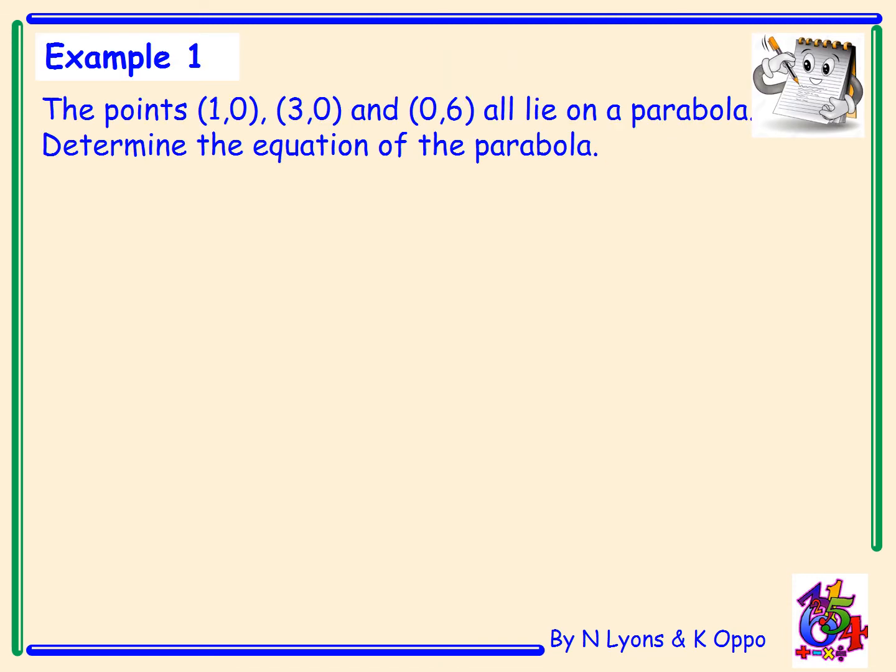Let's try an example. The points (1, 0), (3, 0) and (0, 6) all lie on a parabola. We've been told the roots of the parabola and we've been told the y-intercept. The task is to determine the equation of the parabola. Remember, parabolas are just quadratic functions. Starting off, the general form of any parabola is y equals k times x minus a times x minus b.